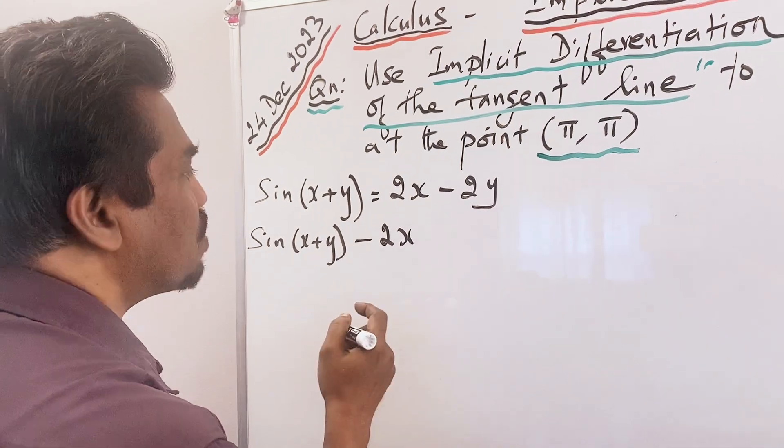Now we know the equation of the tangent line. So y = (1/3)x + (2/3)π. That is the final answer — the equation of the tangent line to the given curve sin(x + y) = 2x − 2y.